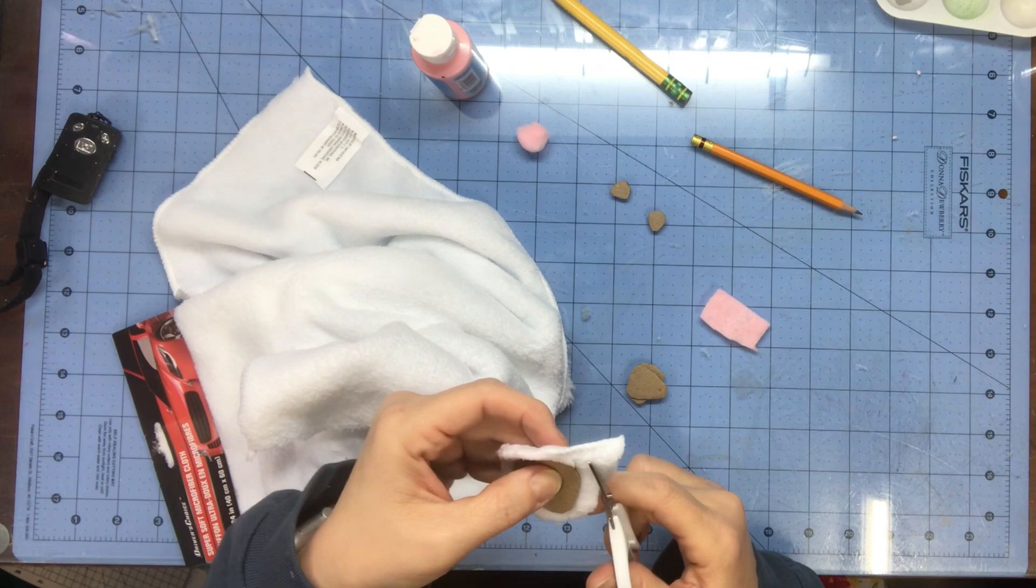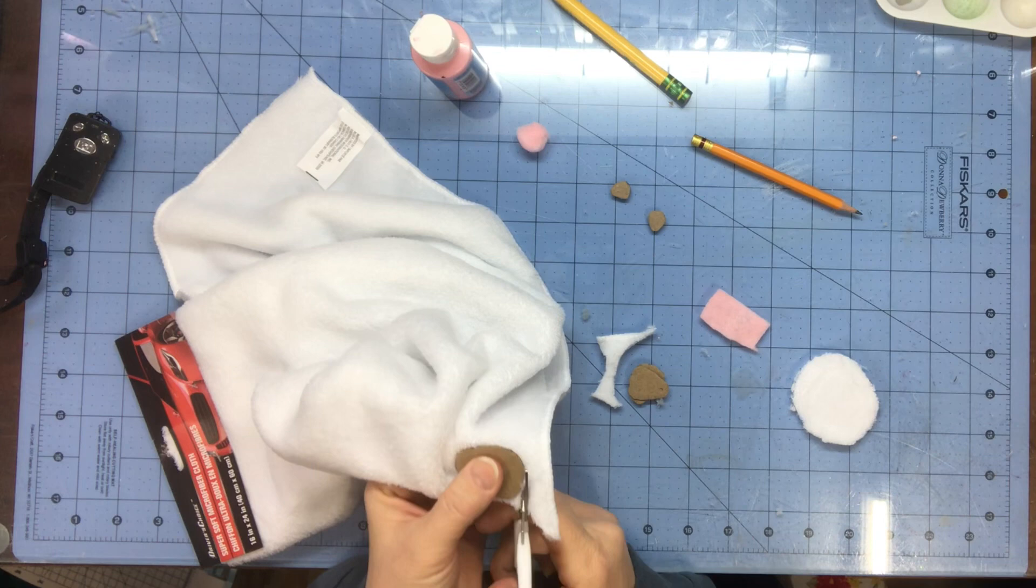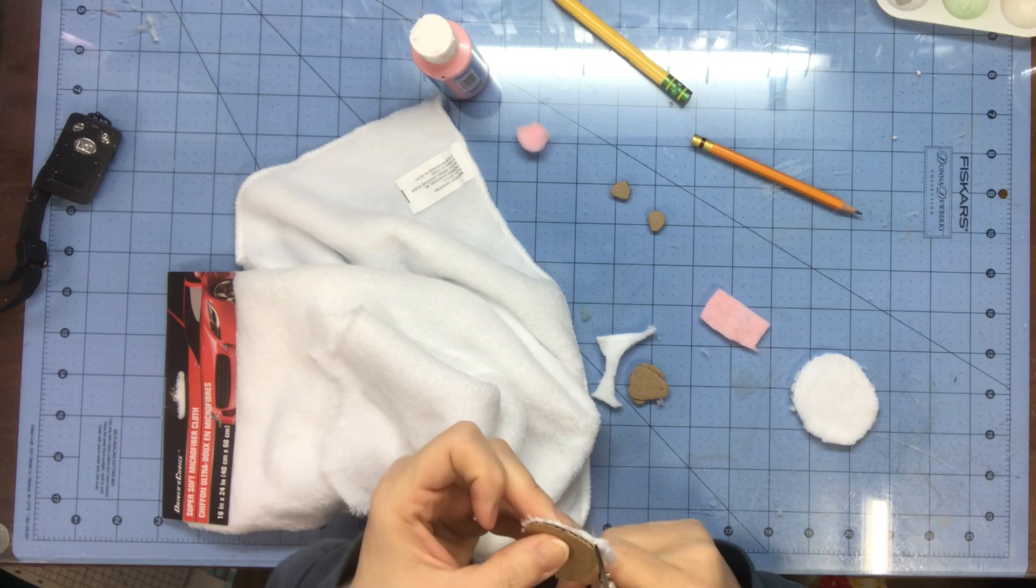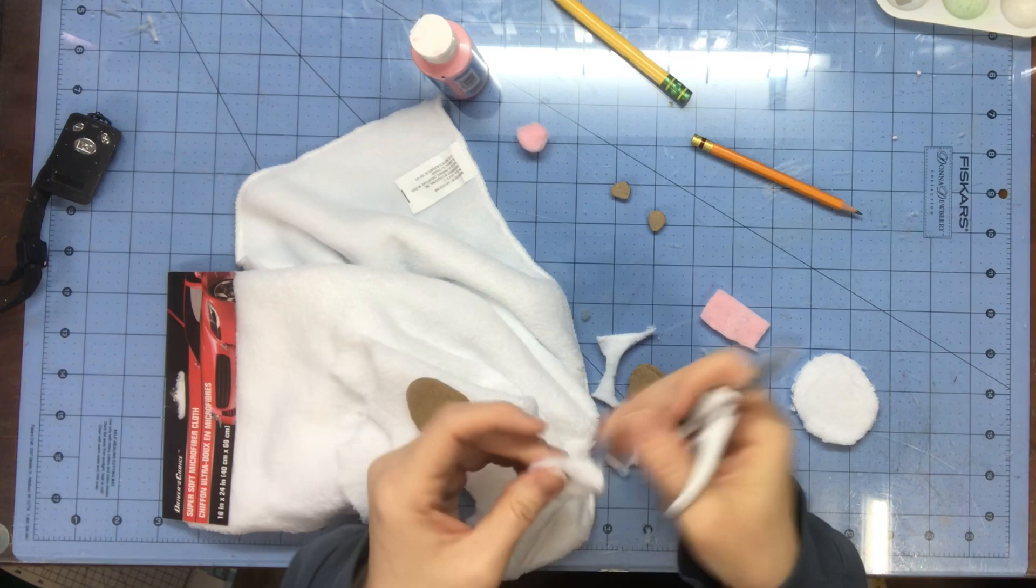Then I'm going to lay my cardboard down and cut one the exact same size. This is going to cover up all of my cardboard and seal those edges in. You'll see what I'm talking about in just a minute. I'm going to do this for all of my feet and my butt.